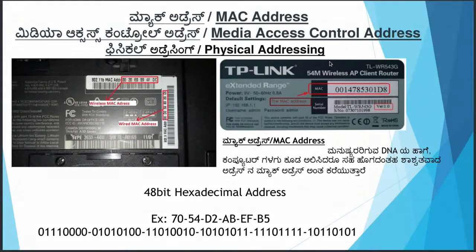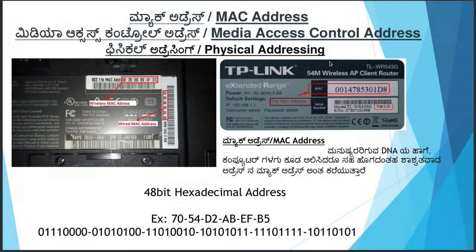There is a cheat sheet available. If you go to Google, you can find a cheat sheet or a binary converter to convert binary values. For finding your MAC address on a computer, open the command prompt and type 'ipconfig /all'. You can display your MAC address that way.